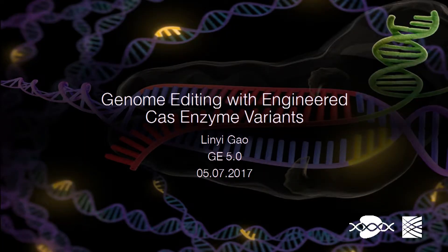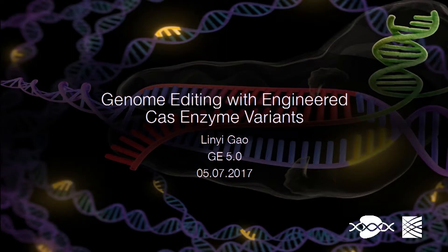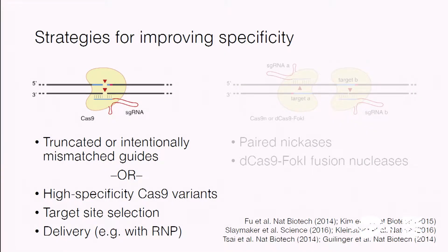As Saurav discussed, one of the important issues to consider for a subset of genome editing applications is targeting specificity. For things like moving into the clinic, it's important to make sure that off-target effects of editing are minimized as much as possible. I'd like to summarize some techniques, including some work that we've been involved in, to help address that problem. Here are some current strategies — not exhaustive — but some major strategies for improving the specificity of creating double-stranded breaks in the genome.